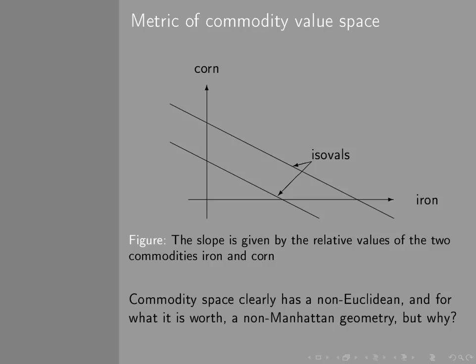Now, what's interesting about this is that it's clear that commodity space has a non-Euclidean and, for what it's worth, a non-Manhattan geometry. The metric of commodity space can't be the metric of the normal space we live in, the normal Euclidean space we live in. Nor is it the metric of a Manhattan street plan. So, what is the metric that commodity space obeys?